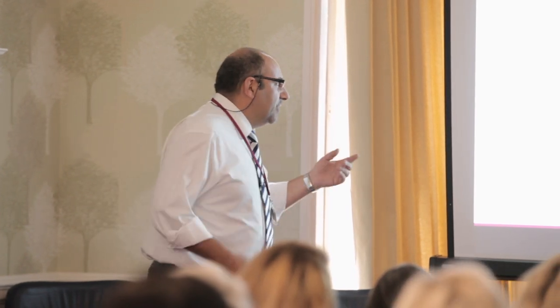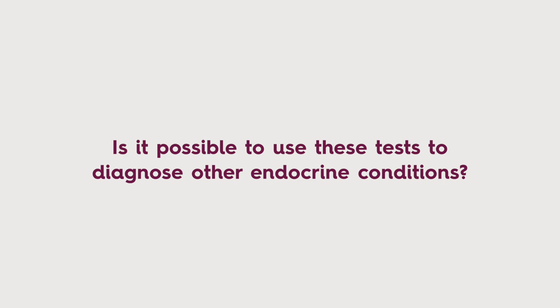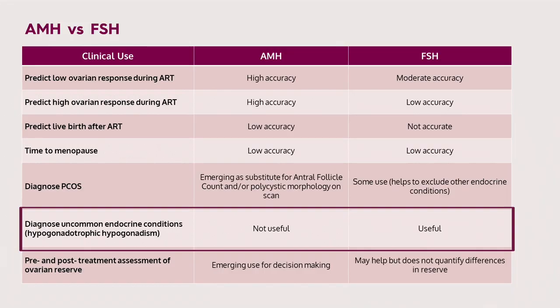That is something FSH can't really help with for PCOS — in PCOS, FSH is often normal or on the low side. FSH is useful for excluding other endocrine conditions, not PCOS itself. For rare conditions like hypogonadotropic hypogonadism — hypo-hypo as we called it in medical school — AMH is not useful either, because FSH is typically low due to lack of signal from above. So for diagnosing that uncommon condition, AMH doesn't help, though it would still tell you how many eggs the patient has.